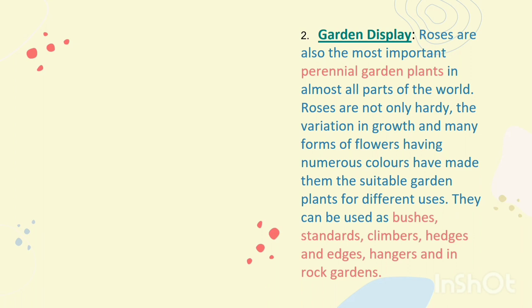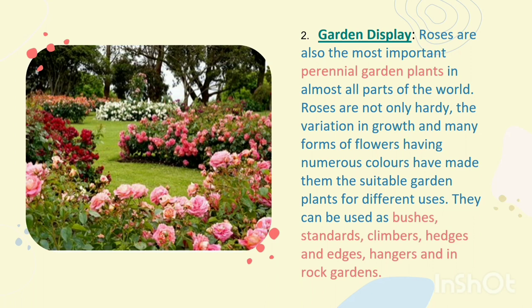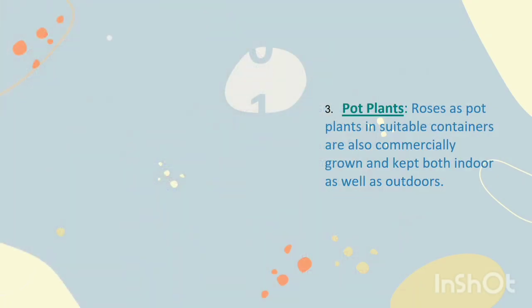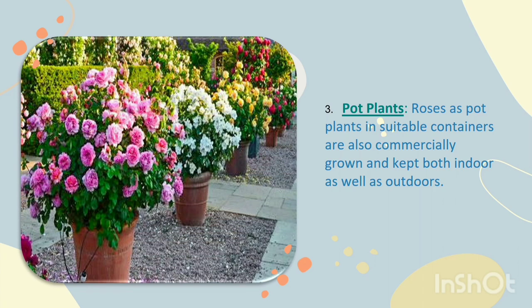Second use: garden display. Roses are also the most important perennial garden plants in almost all parts of the world. They are not only hardy — the variation in growth and many forms of flowers having numerous colors have made them suitable garden plants for different uses. They can be used as bushes, tenders, climbers, hedges and edges, hangers and in rock gardens. Third use: pot plants. Roses as pot plants in suitable containers are also commercially grown and kept both indoors as well as outdoors.